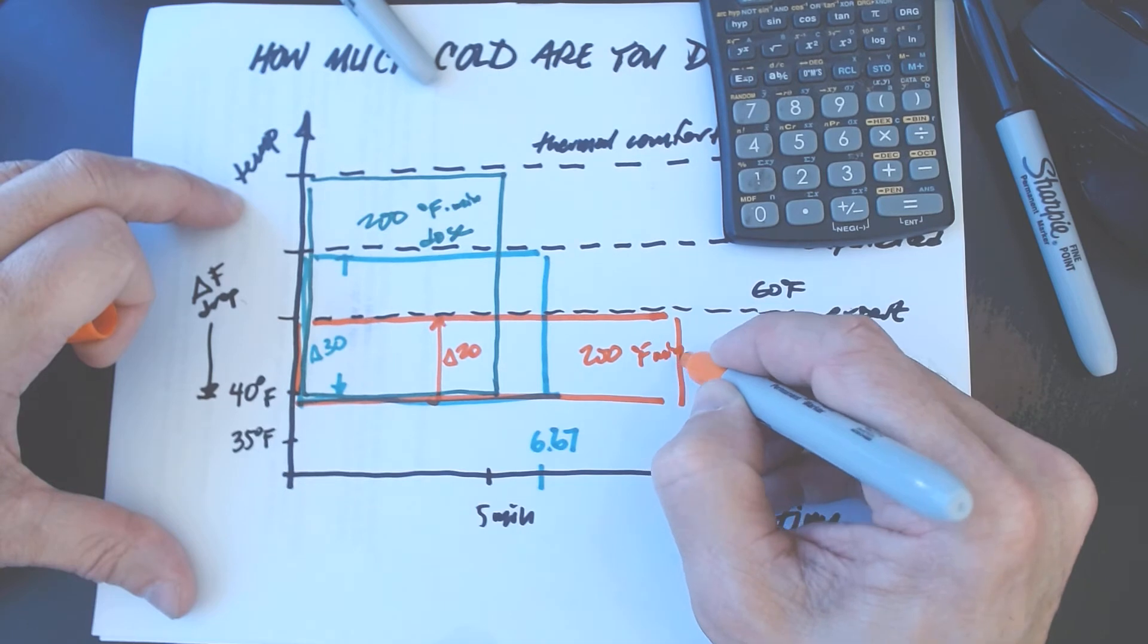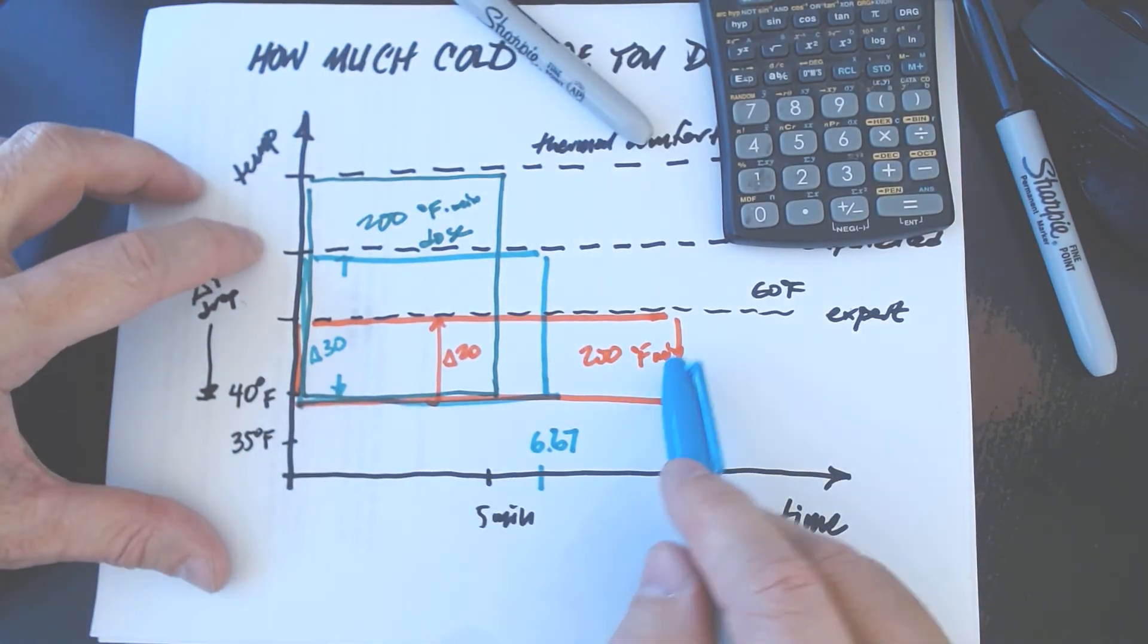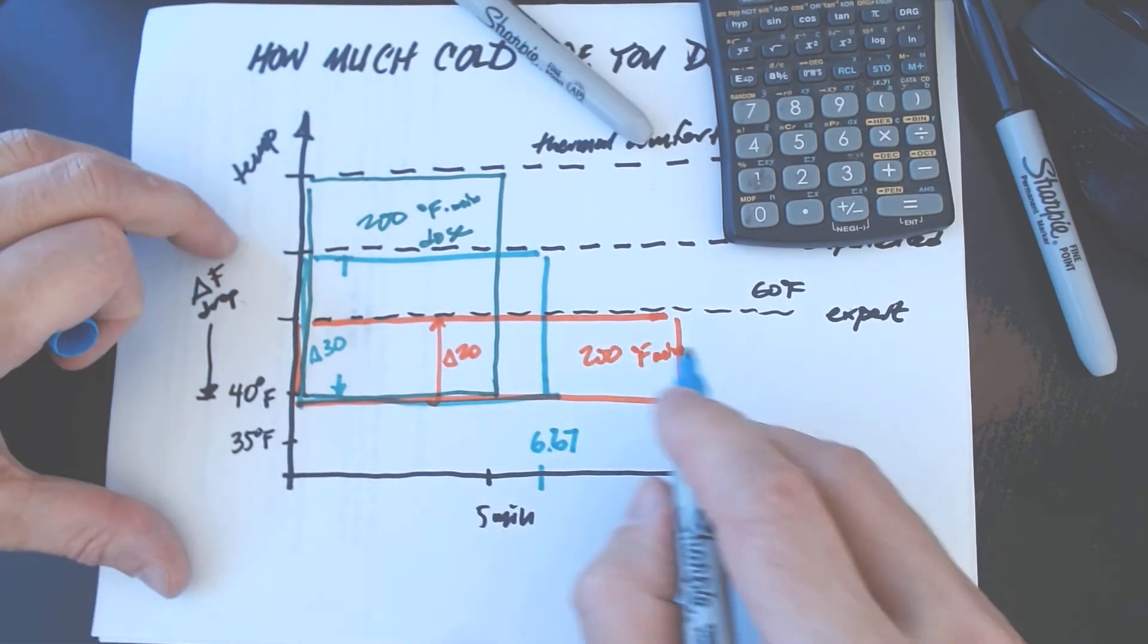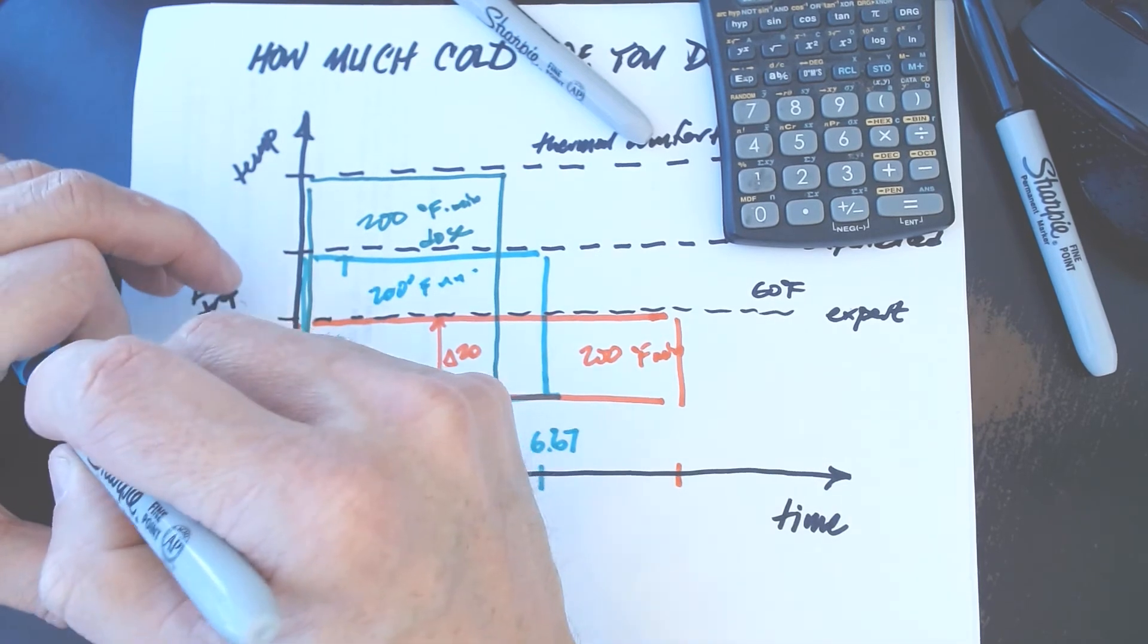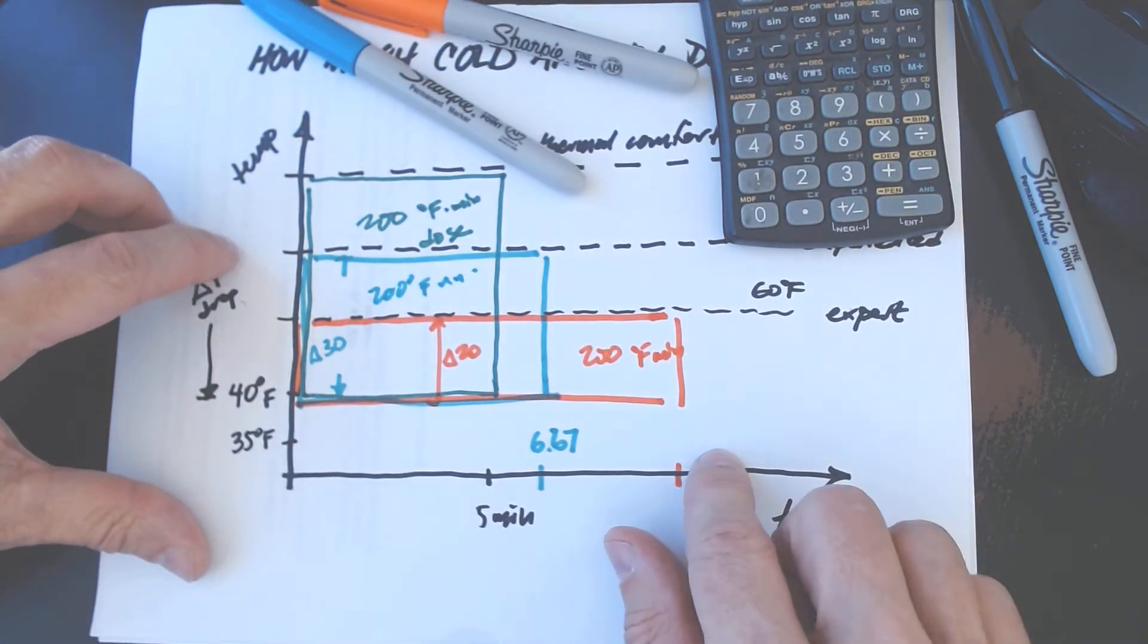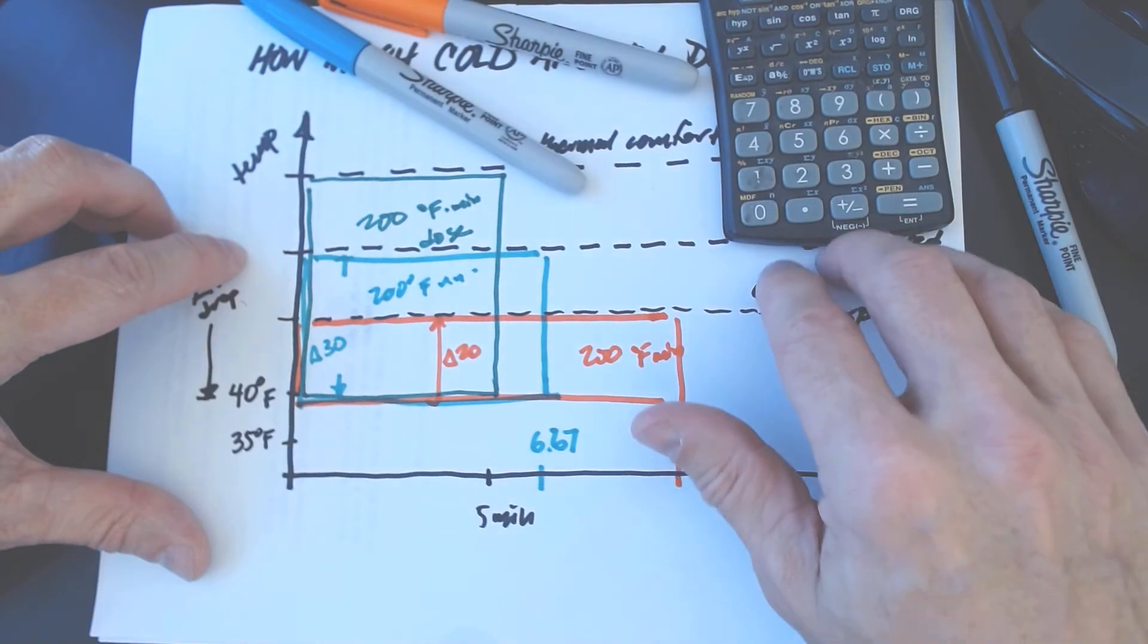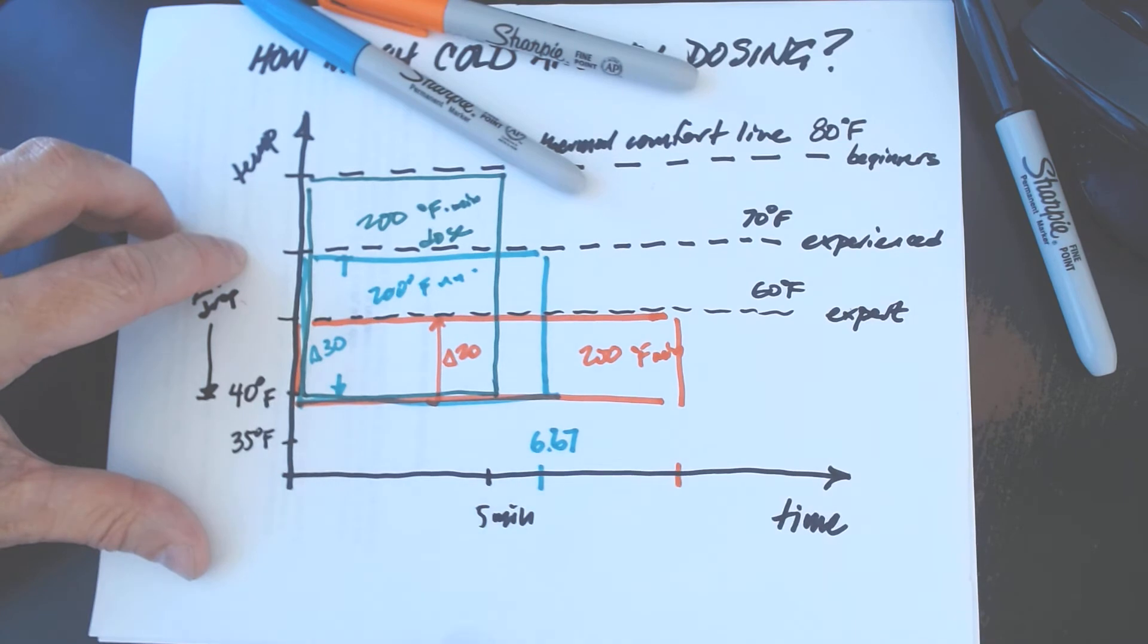40 feels like a day at the beach for me these days. That's why I keep my forge down at 35. There the delta between my hypothetical thermal comfort line of 60 and 35 is 25 and it doesn't take quite so long for me to get the same dose.